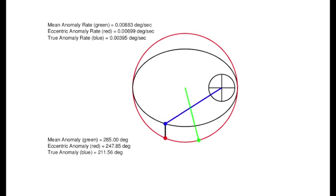Meanwhile, the mean anomaly keeps trucking along at a constant rate. Note that all the anomalies will arrive at perigee and apogee at the same time.